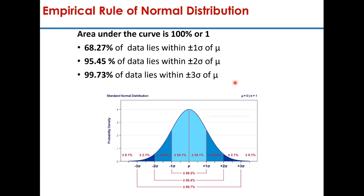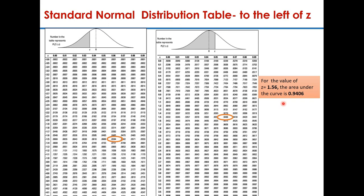Since 3 standard deviations on either side of the mean include practically all the cases, it follows that the highest z-score usually encountered is +3 and the lowest is −3. Standard tables are available to find the area under the curve for a given value of z. This side of the table is when z is negative — that is, the z value lies on the left side of the mean. For example, if z is −1.56, you take that row and the column corresponding to 0.06 to get a value of 0.0594.